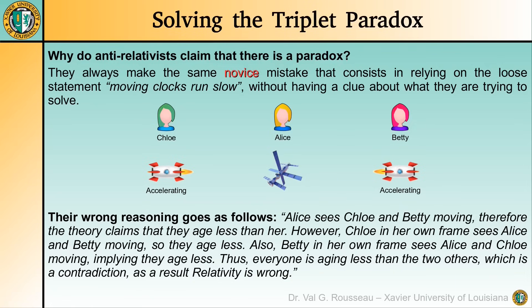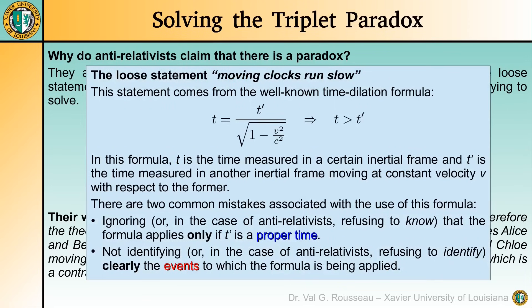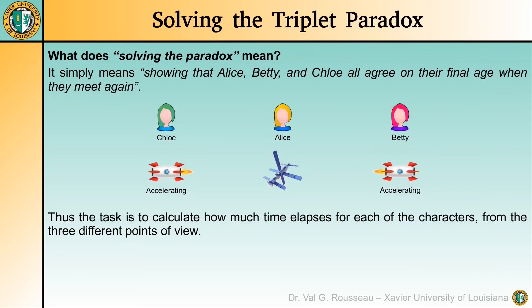The mistake comes from the loose statement 'moving clocks run slow.' The equation associated with this statement is the famous time dilation formula. The most common mistake when using this formula is ignoring that it is valid only if t' is a proper time — in other words, t' must be the time between two events as measured in the frame where those two events happened at the same location. Another common mistake comes from being unable to specify clearly the events to which the formula is being applied. We want to solve the apparent paradox, which simply means that Alice, Betty, and Chloe must all agree on their final age when they meet again.